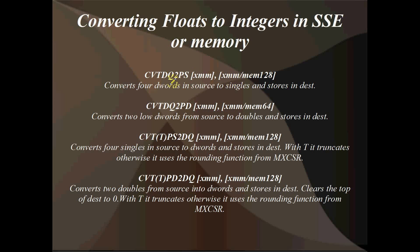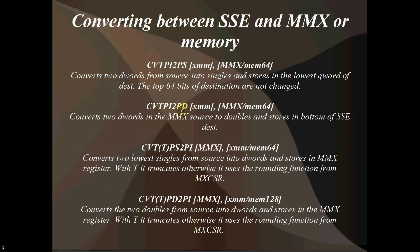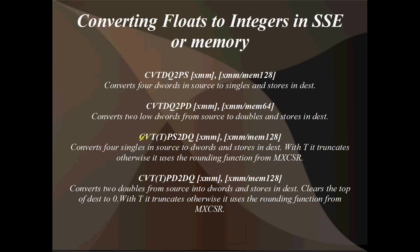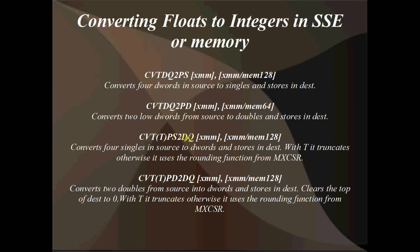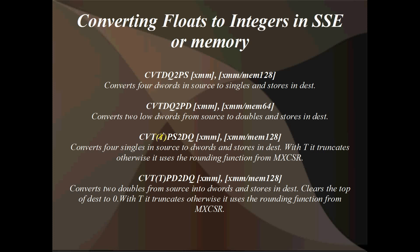So we've got convert packed integers to packed singles, convert packed integers to packed doubles, convert packed singles to packed integers or packed 32-bit ints, and convert packed doubles to 32-bit ints. If you have the T in there - so CVTTPS2DQ - that ignores MXCSR completely and always truncates. They figured that was a pretty useful function so you don't have to mess around with MXCSR. If you just want to truncate, you stick a T in there.